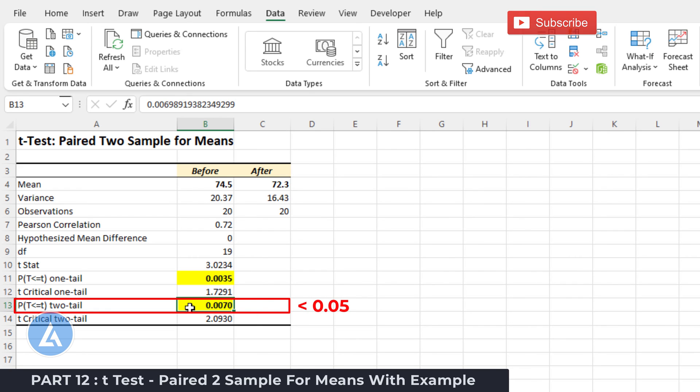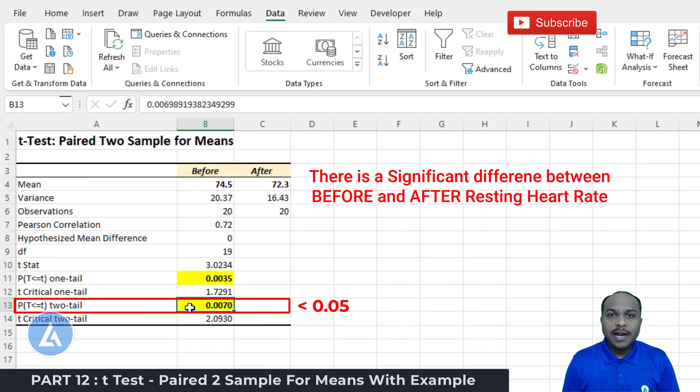If you remember the alpha value that we have selected for performing the Paired t-Test, which was 0.05. Now both of these values are less than 0.05. So there is a significant difference between the before and after resting heart rate.